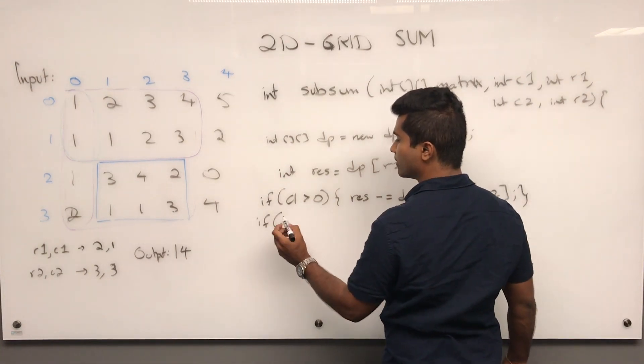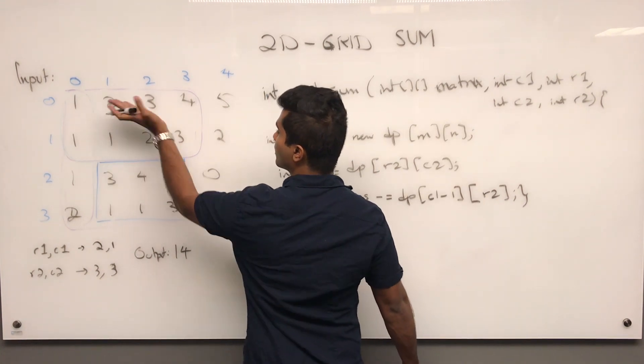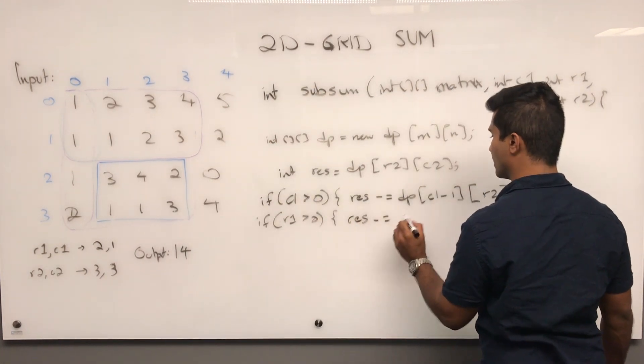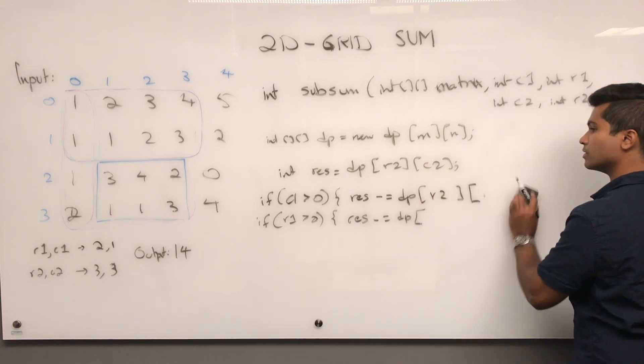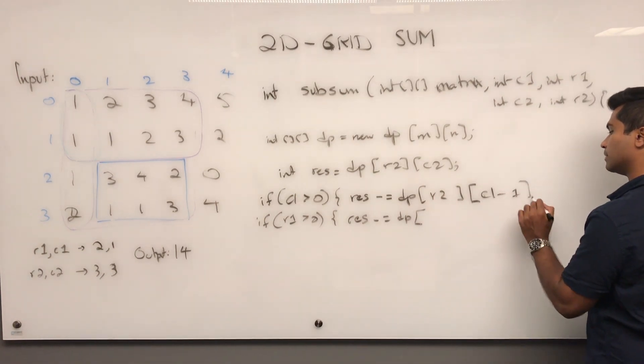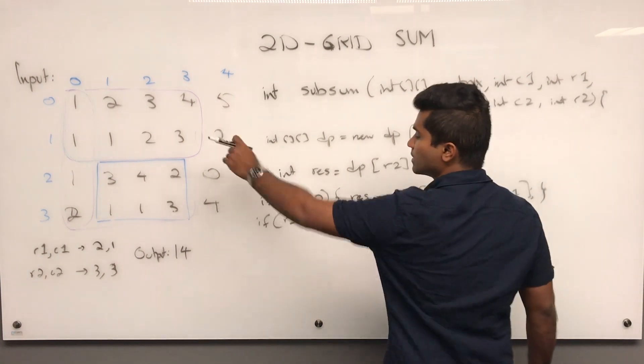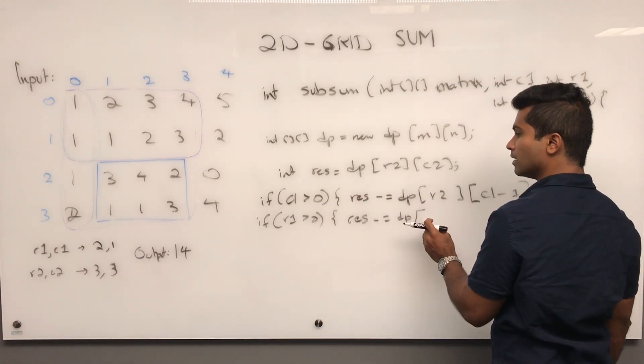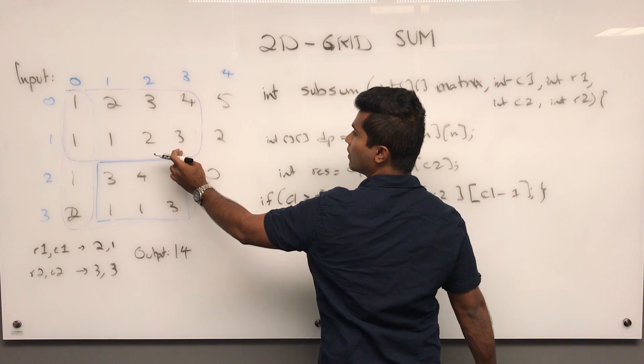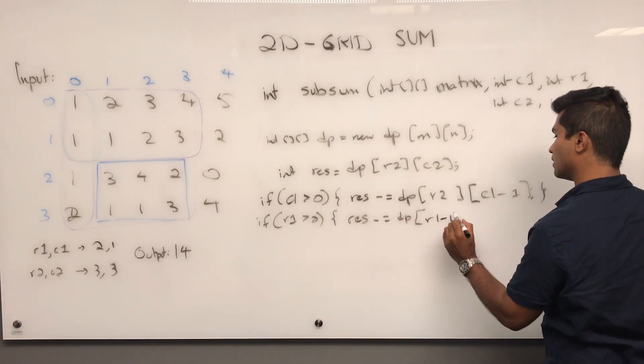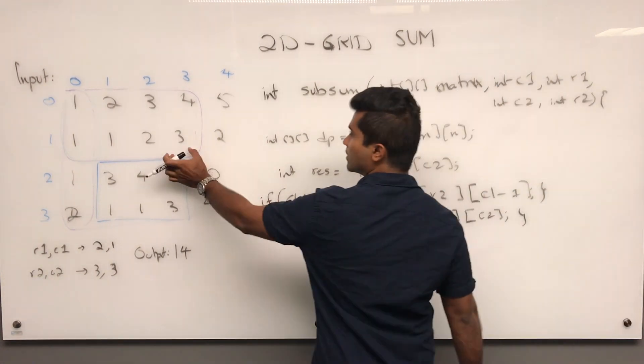And then again, if r1 is greater than 0, that means that there's some space between this row and the top. Then res is decremented by DP. Res has to be decremented by the things at the top. So how do we get this corner? This is going to be r1 minus 1. And then that's going to be c2. Because this would be c2.